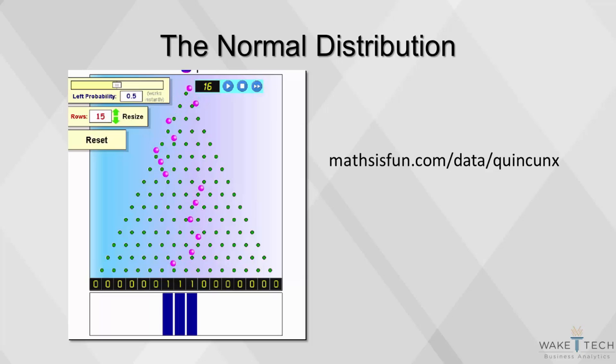Here's a tool you can play with online that illustrates a normal distribution. In real life, it looks like a triangular-shaped pegboard into which balls are dropped. When there is an equal probability that the balls will drop either left or right, their final placement forms a normal distribution.